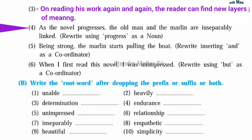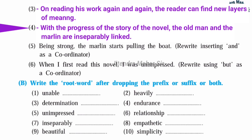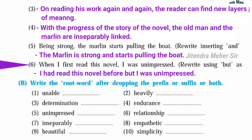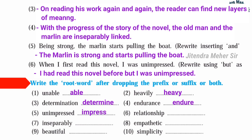Fourth: 'As the novel progresses, the old man and the marlin are inseparably linked' — rewrite using 'progress' as a noun. Answer: With the progress of the novel, the old man and the marlin are inseparably linked. Fifth: 'Being strong, the marlin starts pulling the boat' — rewrite inserting 'and' as a coordinator. Answer: The marlin is strong and starts pulling the boat. Sixth: 'When I first read this novel, I was unimpressed' — rewrite using 'but.' Answer: I had read this novel before but I was unimpressed. B: Write the root word after dropping the prefix or suffix: unable→able, heavily→heavy, determination→determine, endurance→endure, unimpressed→impress, relationship→relate, inseparably→separate, empathetic→empathy, beautiful→beauty, simplicity→simple.